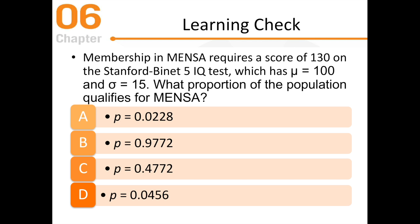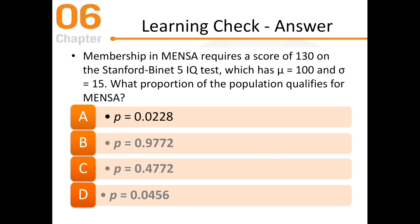Membership in Mensa — the smart persons club — requires a score of 130 on the Stanford-Binet IQ test, which has an average of 100 and a standard deviation of 15. What proportion of the population qualifies for Mensa? They're looking for the top 2% — people who score better than 98% of all others who took that test.